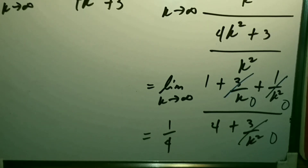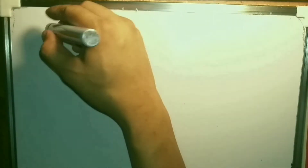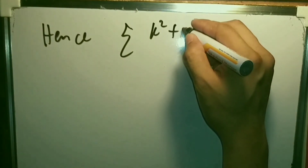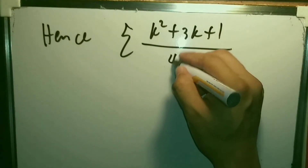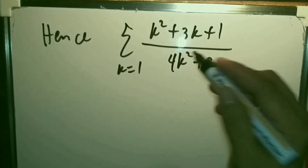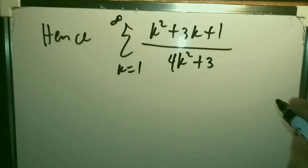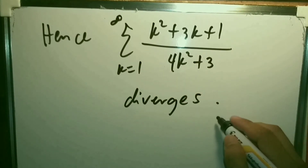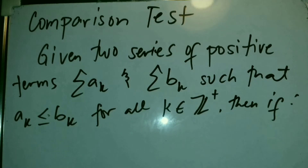Since 1/4 is not equal to 0, by the divergence test we can say that the series summation of (k² + 3k + 1)/(4k² + 3) from k=1 to infinity diverges. Next comes the comparison test: given two series of positive terms summation a_k and summation b_k such that a_k ≤ b_k for all k in the positive integers.